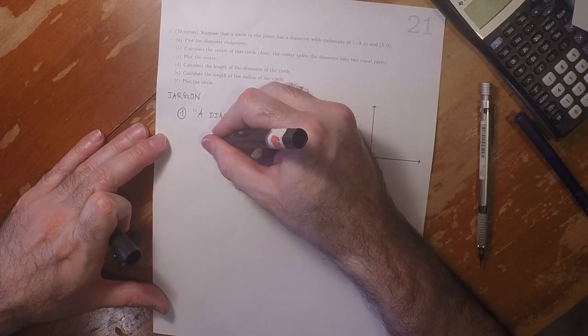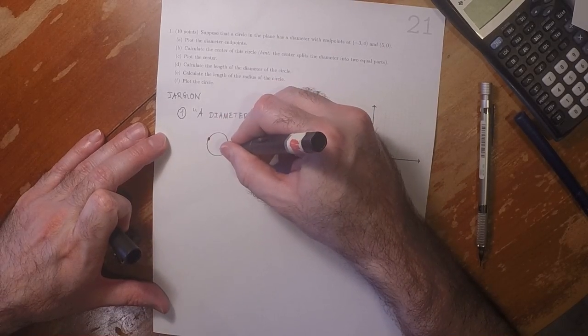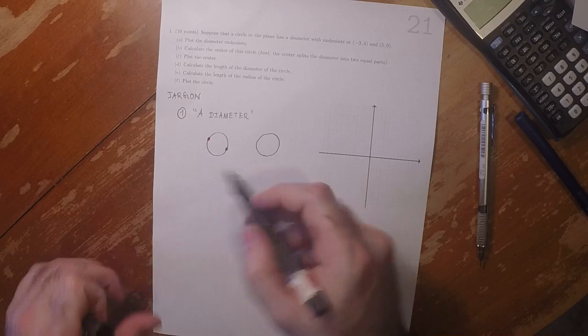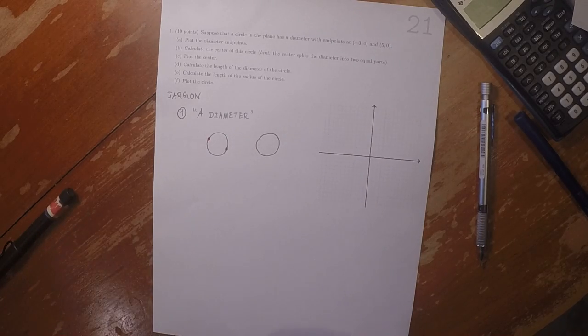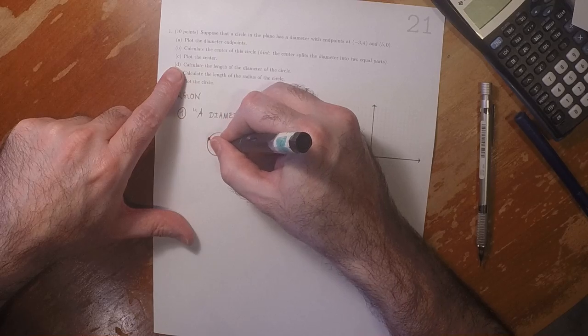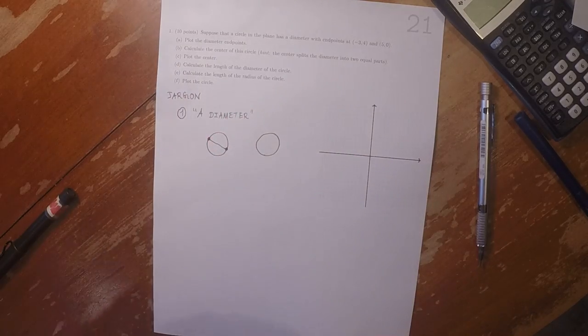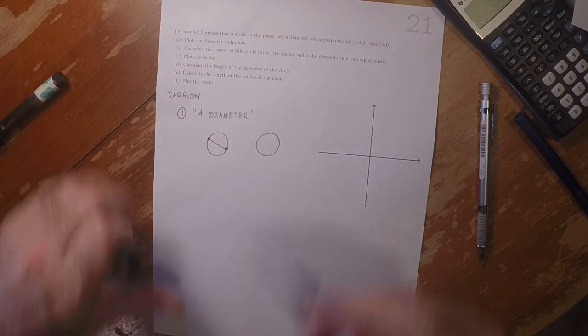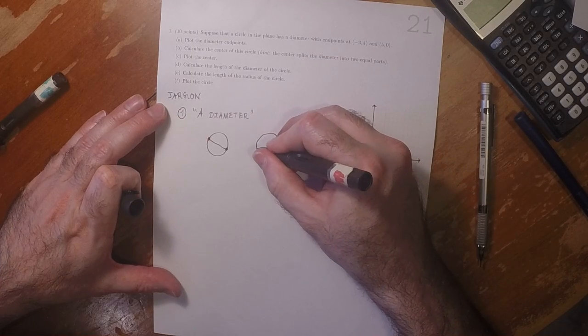then those two red points are the endpoints of a diameter, and that is the diameter we are referring to, but here is another diameter.